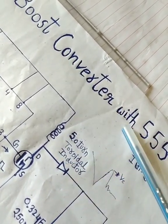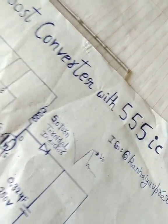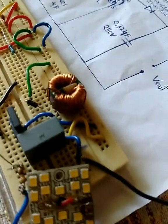This is the boost converter circuit using 555 timer IC. To demonstrate, I am gonna power this 45V LED using a 7.4V lithium ion pack.